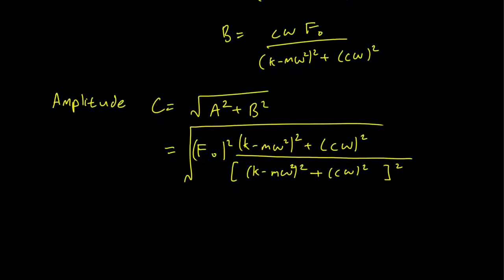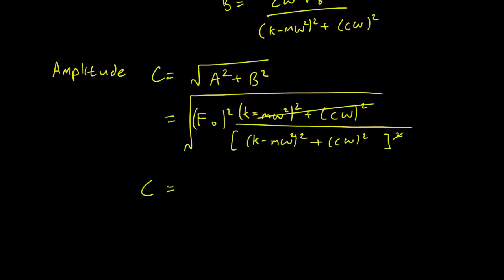But we can just cancel the top and the bottom. So this cancels with the squared here. And what we're left with is that the amplitude is equal to f naught over square root of k minus m omega squared squared plus c omega squared.